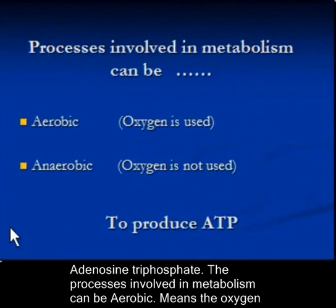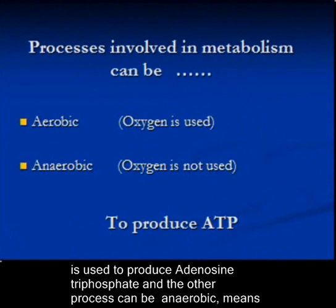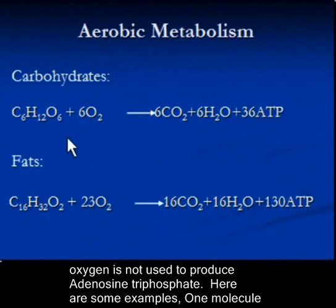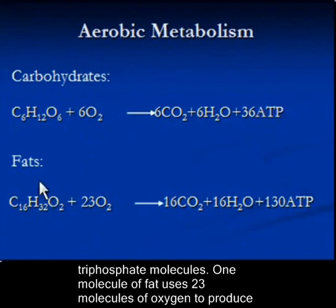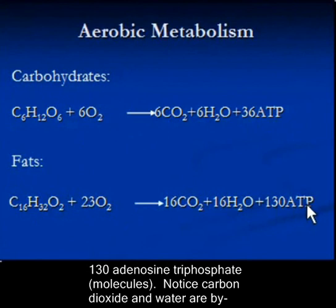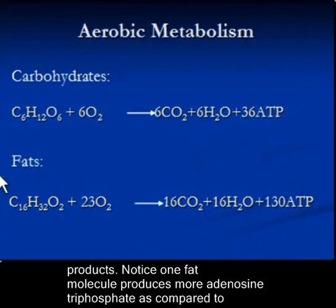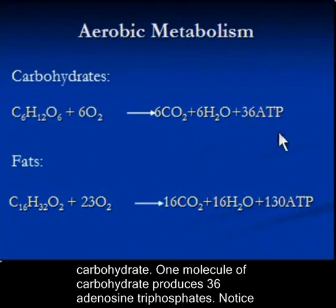The processes involved in metabolism can be aerobic, meaning oxygen is used to produce adenosine triphosphate, or anaerobic, meaning oxygen is not used. For example, one molecule of carbohydrate uses six molecules of oxygen to produce 36 adenosine triphosphate molecules. One molecule of fat uses 23 molecules of oxygen to produce 130 adenosine triphosphate molecules. Carbon dioxide and water are byproducts, and notably, one fat molecule produces far more adenosine triphosphate than one carbohydrate molecule. Fat also produces more carbon dioxide.